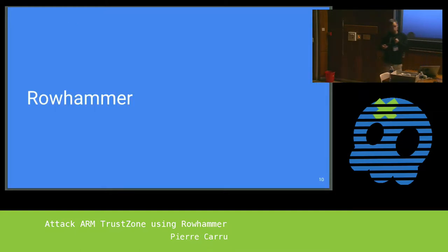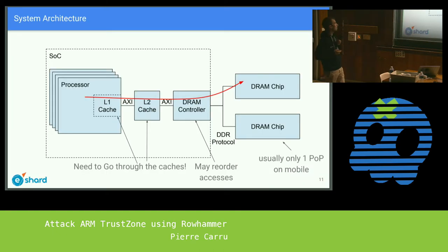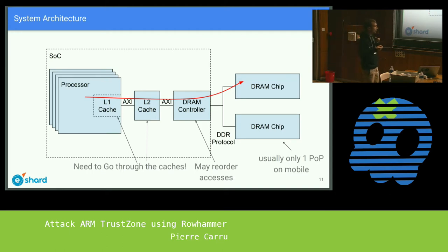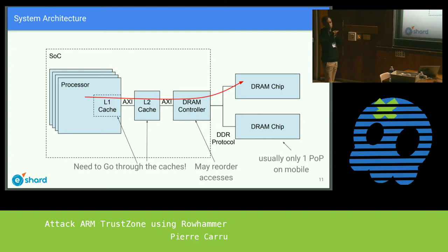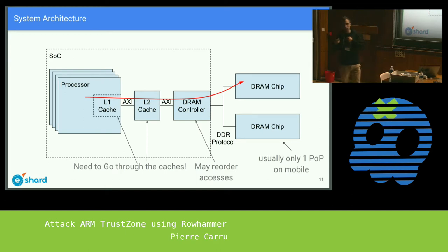A small introduction about Rowhammer: what we want to do is corrupt things in the DRAM chips. We are executing code, and there are several elements that prevent us from directly accessing the RAM — the caches and the DRAM controllers with their optimization logic. What we need to do is perform lots of accesses to corrupt memory cells. The caches are the biggest issue.